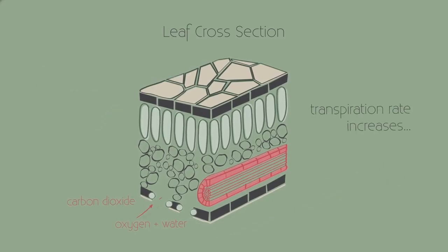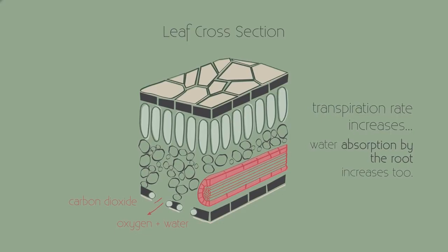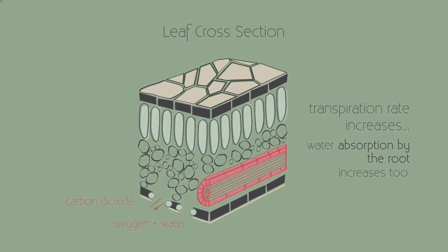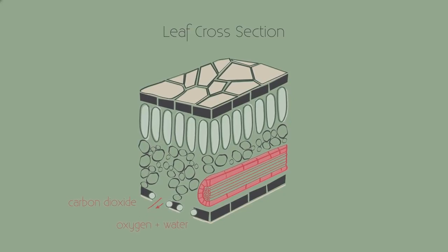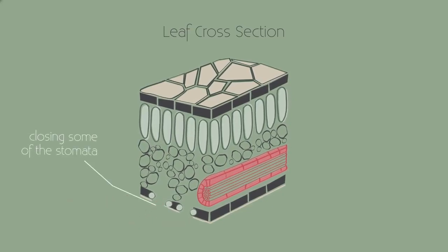If the rate of transpiration increases, then the rate of water absorption by the roots needs to increase too. When water is scarce, or if the roots are damaged, the plant needs to reduce its transpiration rate by closing some of their stomata.